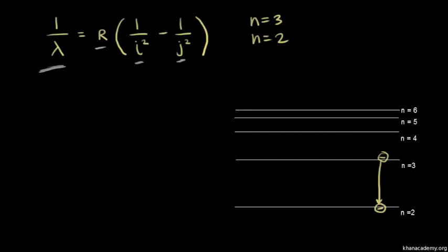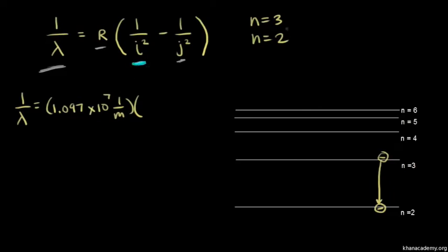Let's calculate the wavelength of light emitted when the electron falls from the third energy level to the second. One over lambda equals the Rydberg constant, 1.097 times 10 to the seventh (units: one over meter), times one over i squared. The lower energy level is n equals two, so we plug in one over two squared, minus one over the higher energy level, n equals three, so minus one over three squared. One over two squared is one fourth (0.25), minus one over nine — so one fourth minus one ninth gives us 0.1̄3̄8̄.